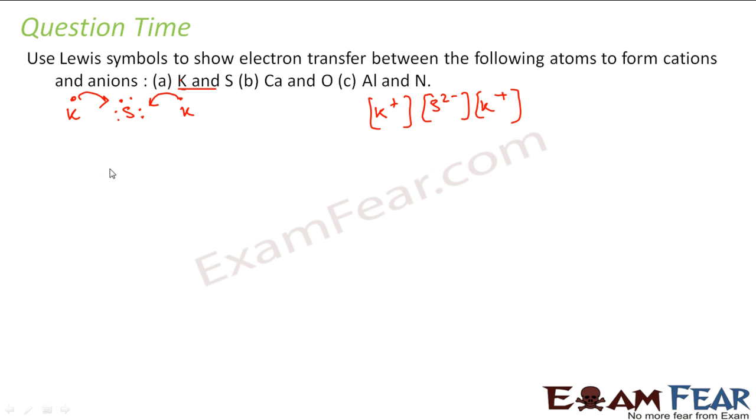If we talk about calcium and oxygen, calcium has two extra electrons, oxygen has six in the valence shell. Calcium will be eager to give these two electrons to oxygen. So it will become calcium two plus and oxygen two minus.